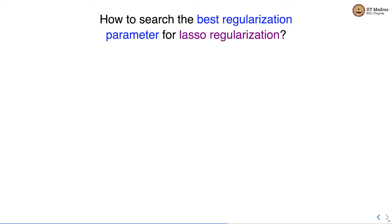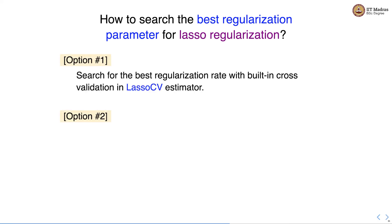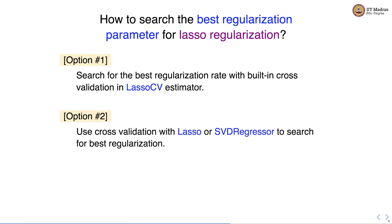Similar to Ridge, we also need to search for the best regularization parameter for Lasso. There are two options: we can use the LassoCV estimator that has built-in cross-validation for finding the best regularization rate, or use cross-validation with Lasso and SGDRegressor to search for the best regularization. We can use hyperparameter search methods like grid search or randomized search for finding the best regularization parameter.